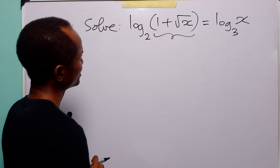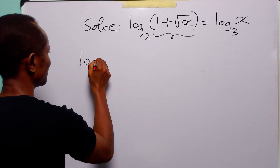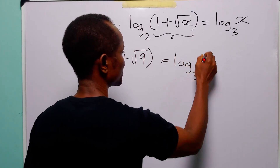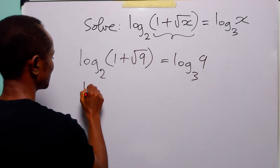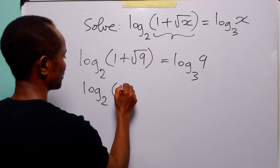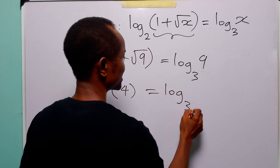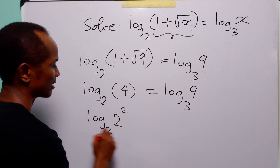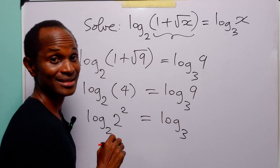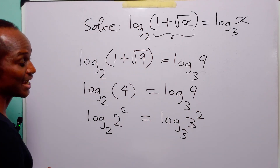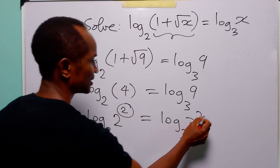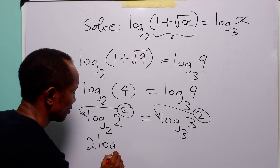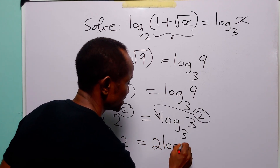Now let us check if that is true. When we substitute nine for x in this equation, we have that log to base two of (one plus square root of nine) is equal to log to base three of nine. The square root of nine is three, so plus one gives four. So we have log to base two of four equals log to base three of nine. Four is two squared and nine is three squared, so applying the power rule to both sides, we bring down the exponents as multipliers: two times log to base two of two is equal to two times log to base three of three.